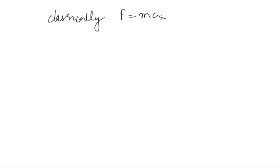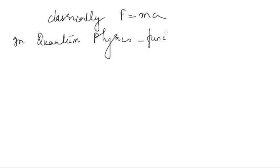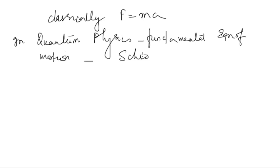Quantum mechanically, if I want to study the dynamics of the system, I need an equation of motion. For example, in classical physics we have F equals ma — Newton's laws of motion, which cannot be derived; they are postulates. Similarly, in quantum physics we have fundamental equations of motion given by Schrödinger, which will give us the dynamics of the system — how psi changes with t.